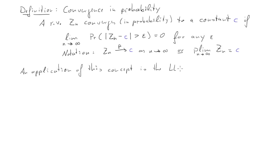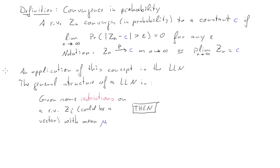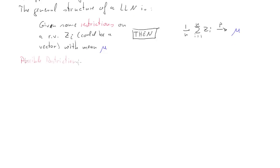An application of this concept is the laws of large numbers — and there are different laws of large numbers. The general structure is: given some restrictions on a random variable Z_i, where Z_i could be a vector with mean vector mu, a law of large numbers establishes that the average of the Z_i's — which will be Z_n — converges in probability to mu.